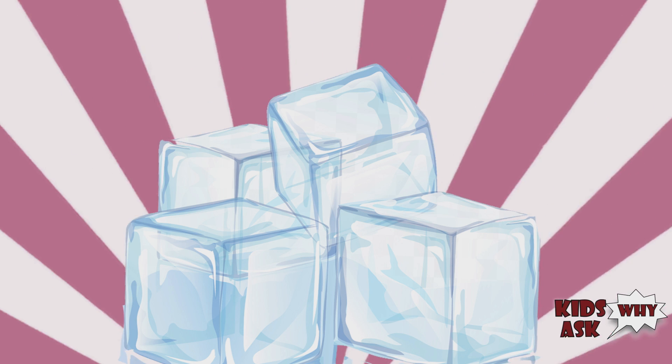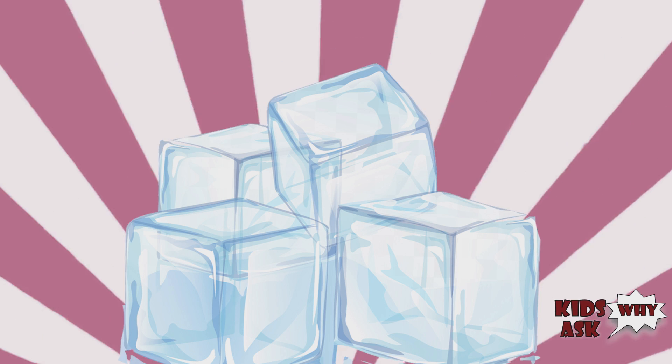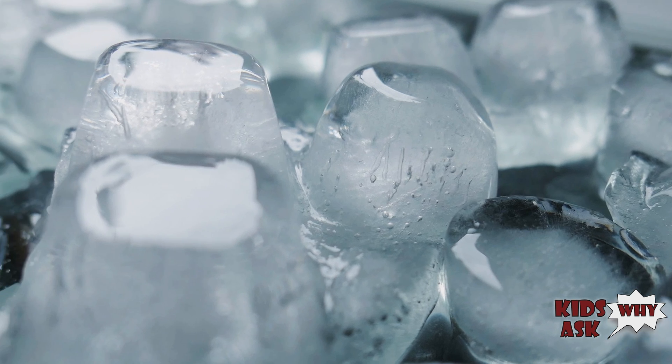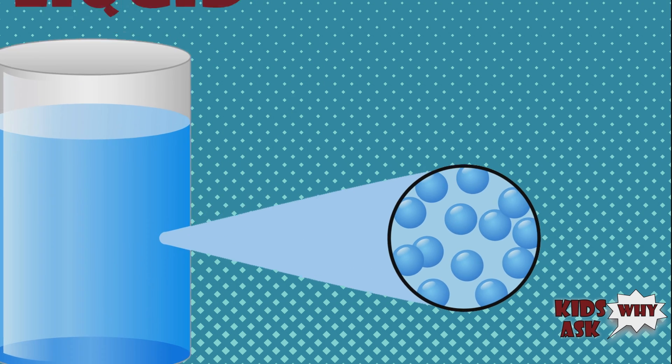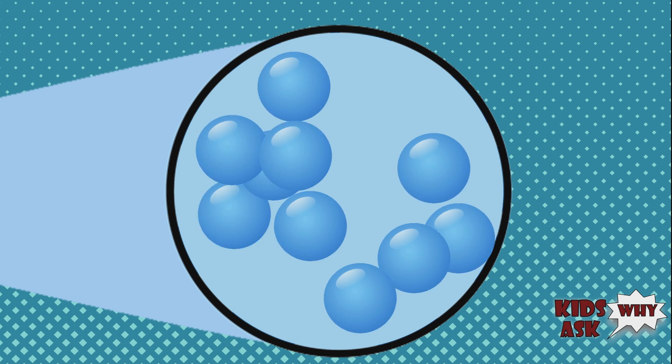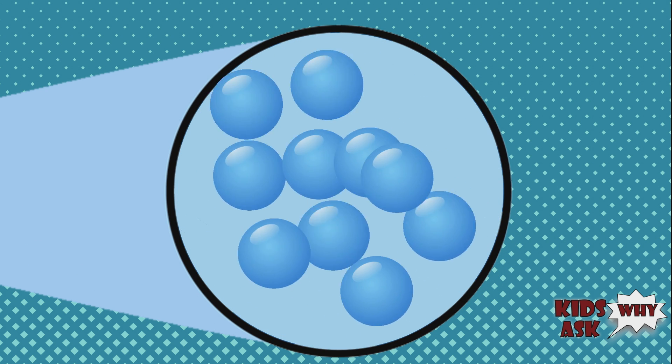So why does water turn into ice? When water freezes, it passes from the liquid to the solid state. As a liquid, water molecules are in constant motion, bumping and jostling each other and never staying in one place for long.